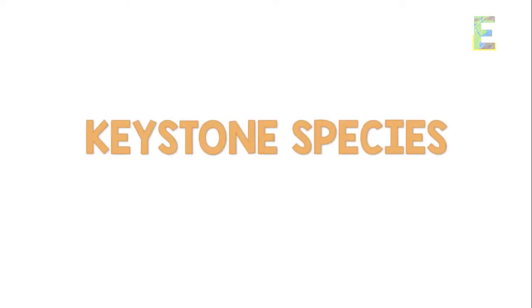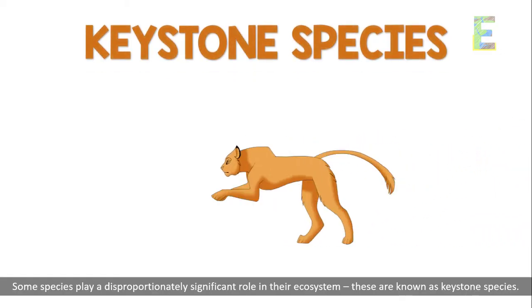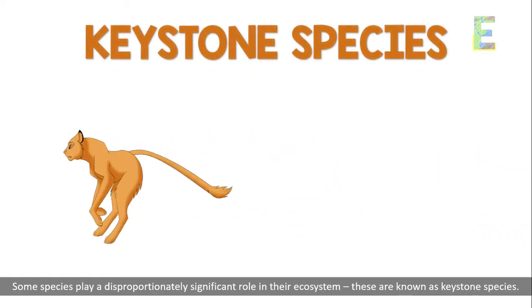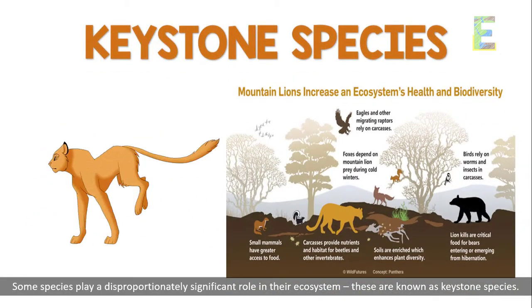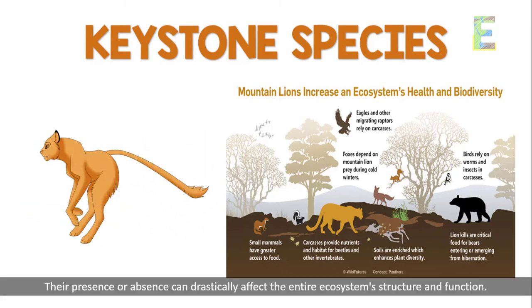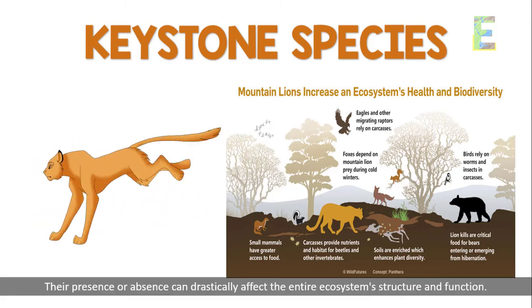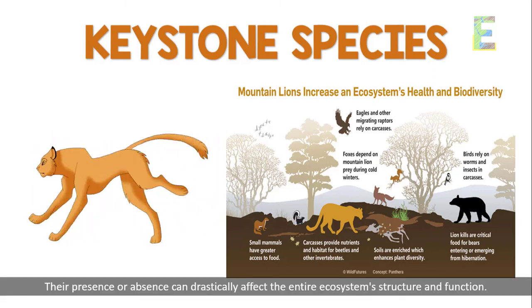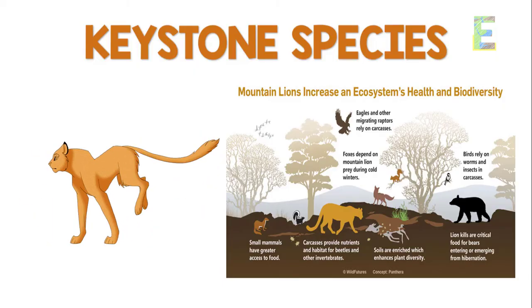Keystone species. Some species play a disproportionately significant role in their ecosystem. These are known as keystone species. Their presence or absence can drastically affect the entire ecosystem's structure and function.